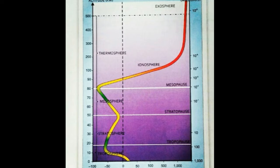The exosphere is the uppermost layer and it gradually merges into outer space. Very light gases like hydrogen and helium are found here. The temperature increases with height and may reach about 4500 degrees Celsius.